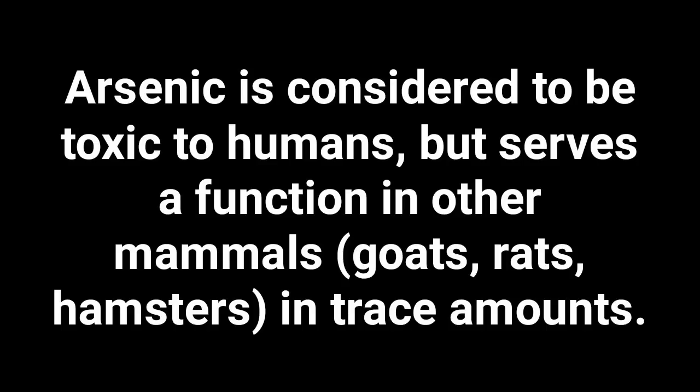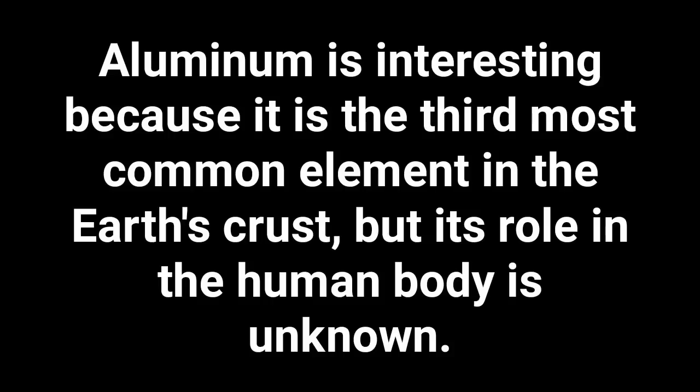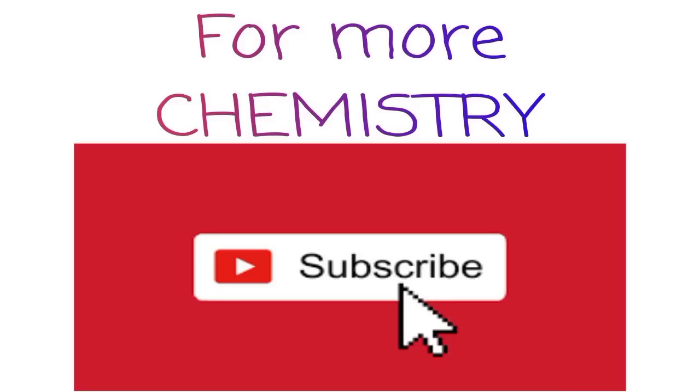Arsenic is considered to be toxic to humans but serves a function in other mammals such as goats, rats, and hamsters in trace amounts. Aluminum is interesting because it is the third most common element in the Earth's crust, but its role in the human body is unknown.